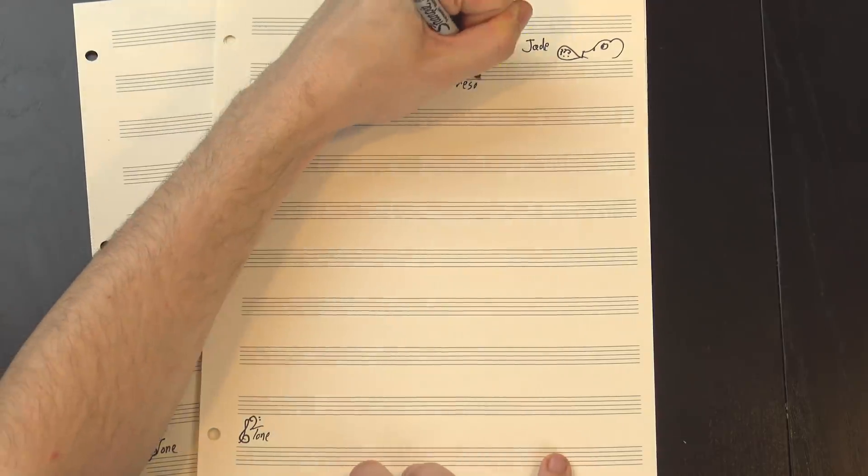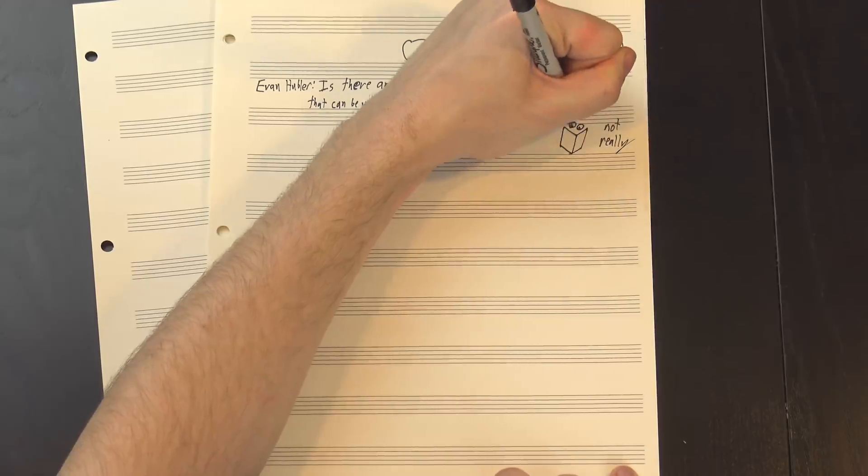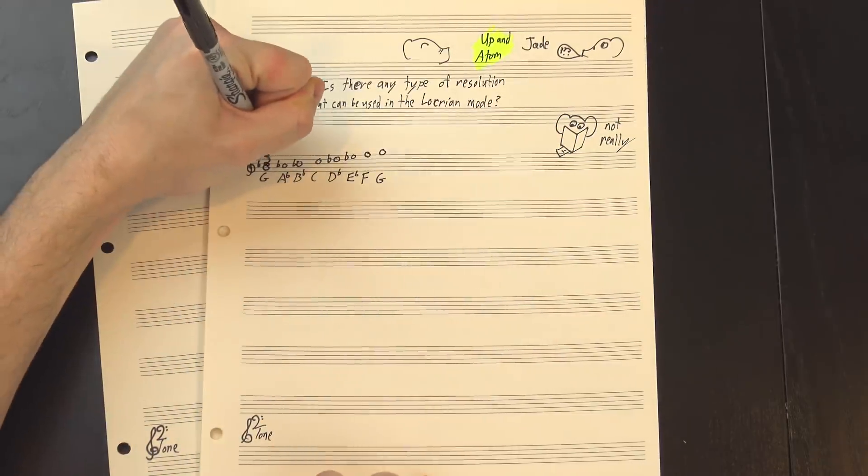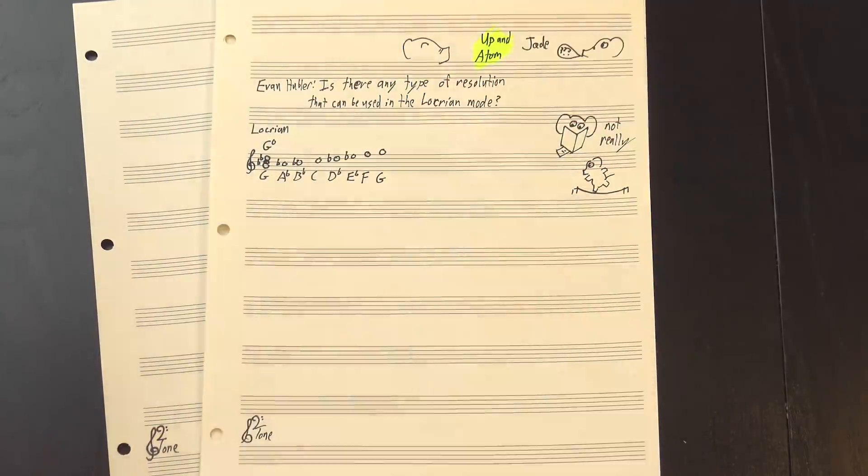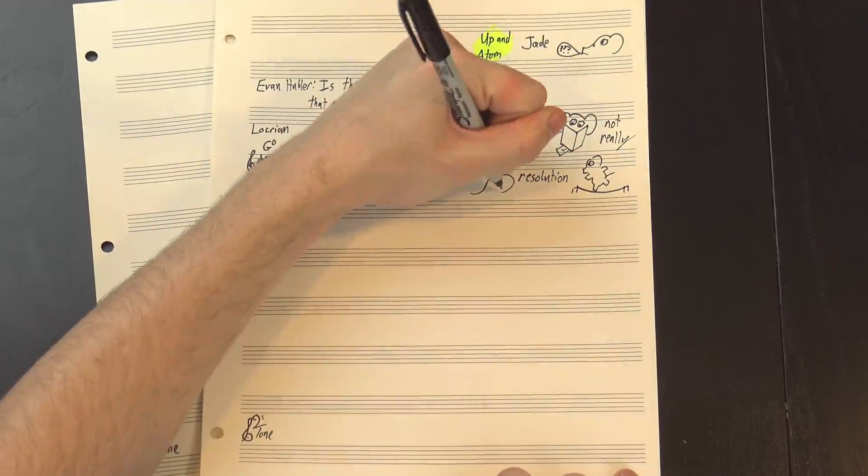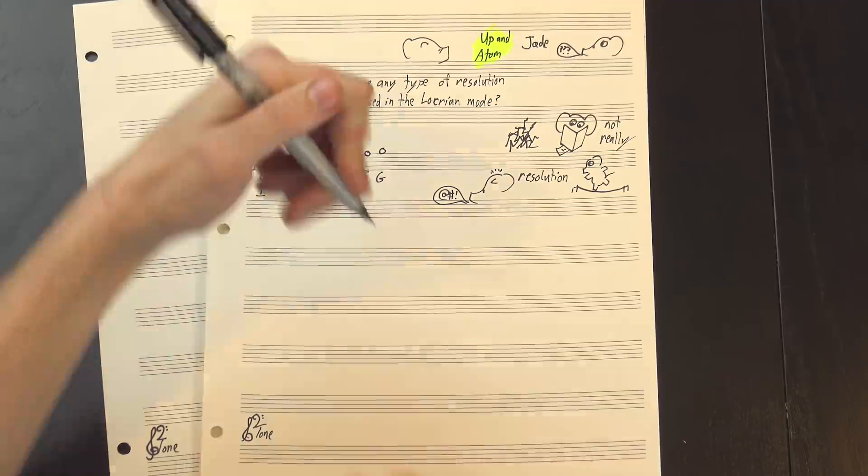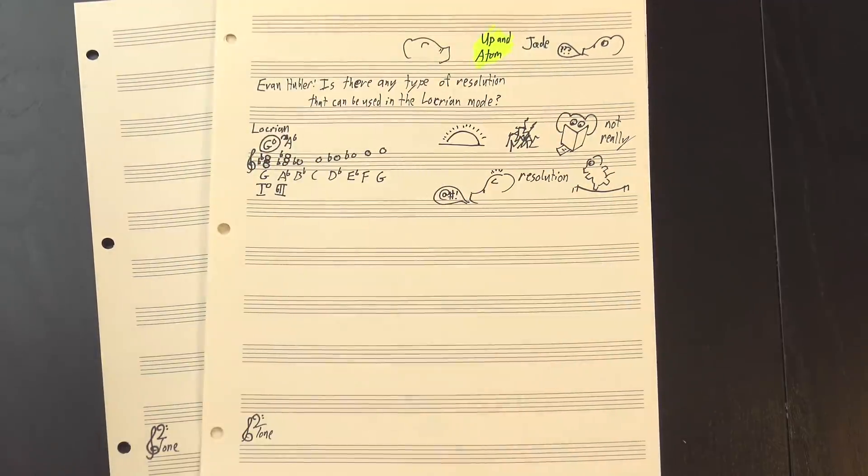Evan Hubler asked, is there a type of resolution that can be used in the Locrian mode? Not really, at least not any good ones that I know of. Locrian is a scale built on top of a diminished triad, and diminished chords are just too unstable to really resolve to. After all, a resolution is basically just a release of tension, and there's nowhere in Locrian that's more tense than the I chord. If anything, you can actually resolve the I chord to the flat two, but then it just sounds like you're in major. Next question.